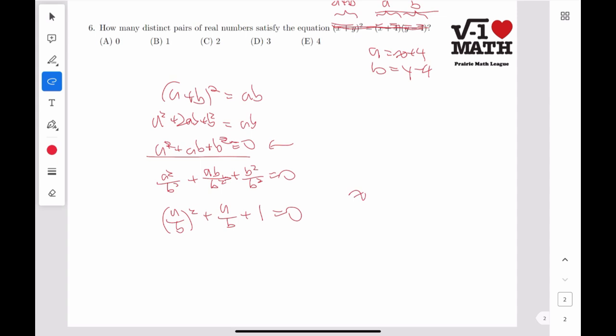And this gets us a over b squared plus a over b plus 1 is equal to 0. And if we write, or x is a bad choice, z equals a over b,